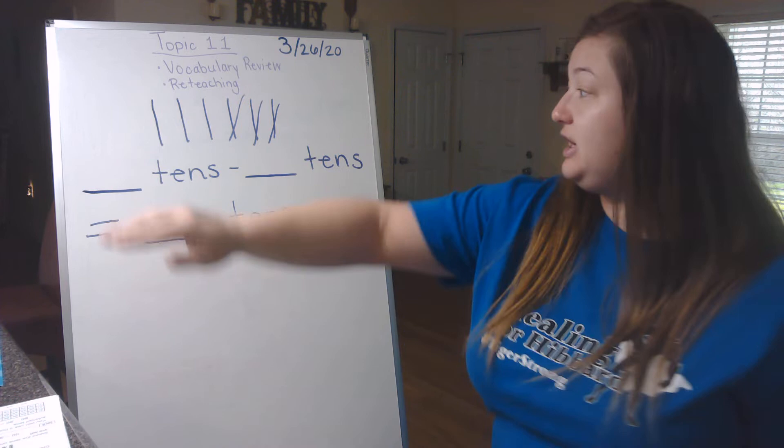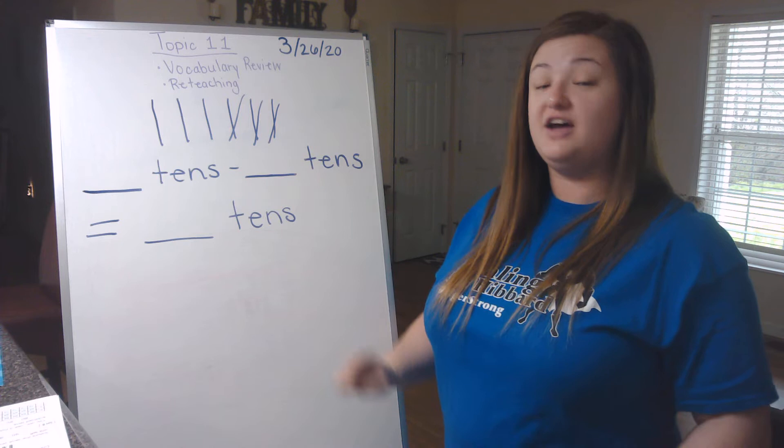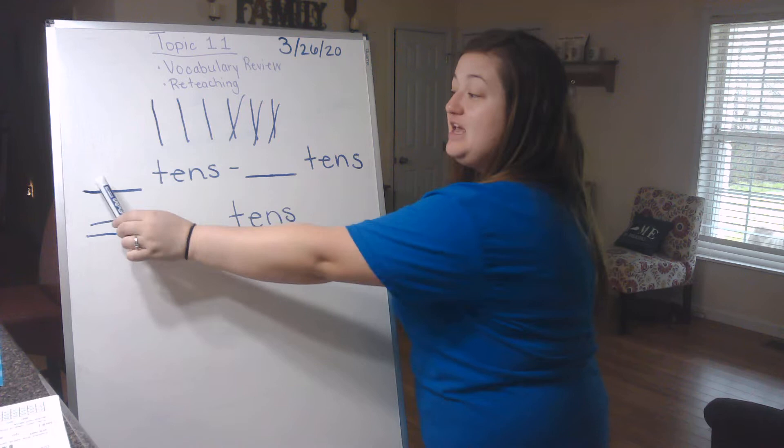So if we look at our groups of ten, I've got one, two, three, four, five, six. And the reason I'm saying one, two, three, four, five, six instead of ten, twenty, thirty, forty, fifty, sixty, is because in this problem it says blank tens. It doesn't say blank subtract blank. It wants to know the groups of tens.